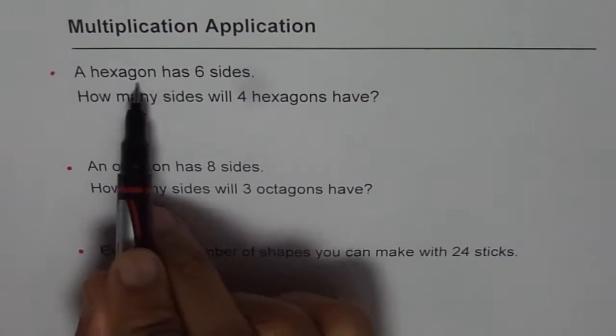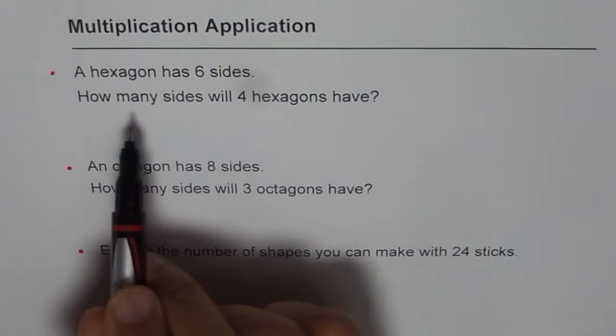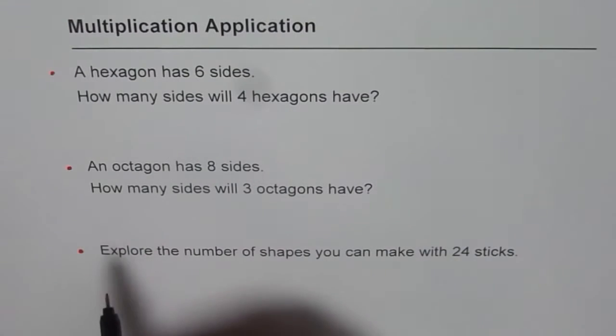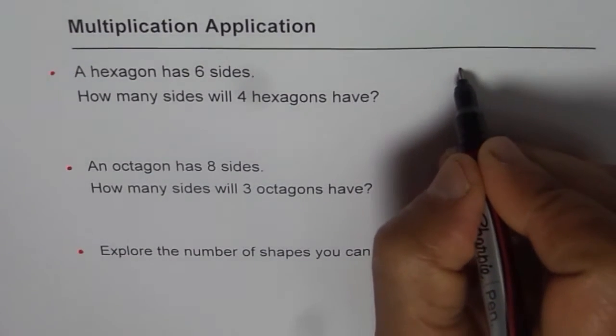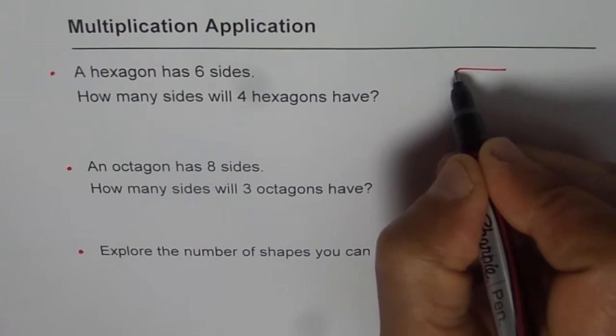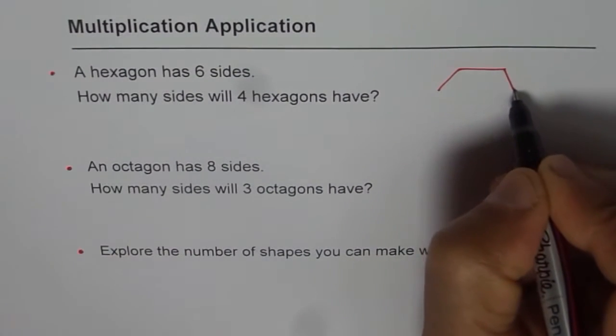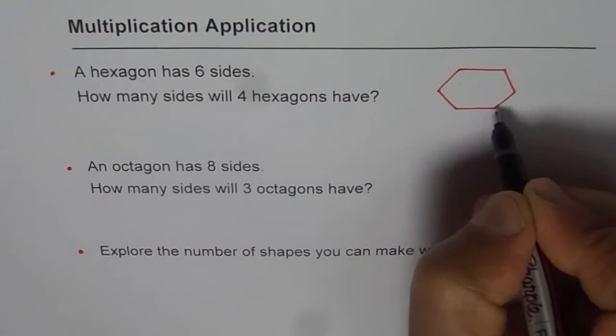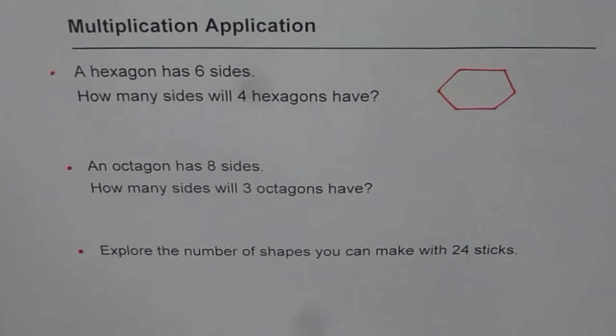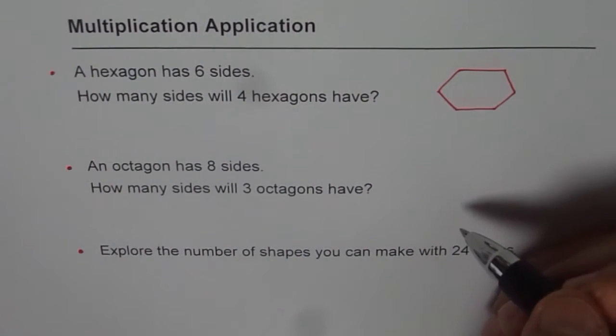It says a hexagon has six sides. How many sides will four hexagons have? So what we can do is we can first draw a hexagon. So let's say this is our hexagon. It has six sides. So one, two, three, four, five and six. So it has six sides. That is for one hexagon.